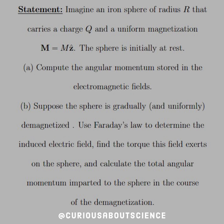Part A: compute the angular momentum stored in the electromagnetic fields. Part B: suppose the sphere is gradually and uniformly demagnetized. What a weird little switch here instead of the field going away, but we'll see how they tie together. Use Faraday's law to determine the induced electric field and find the torque this field exerts on the sphere, and calculate the total angular momentum imparted to the sphere in the course of the demagnetization.